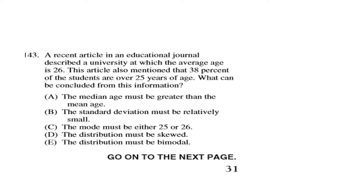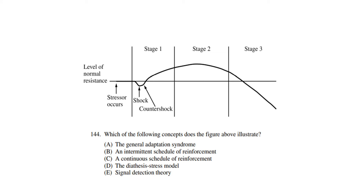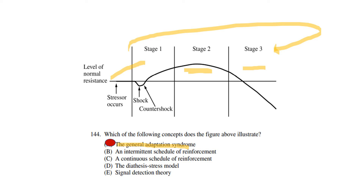Question 143: A recent article described a university at which the average age is 26, and also mentioned that 38 percent of students are over 25 years of age. What can be concluded from this information? The distribution must be skewed. Question 144: A figure illustrates the General Adaptation Syndrome (GAS), developed by Hans Selye. The three stages represent a person's stress response: the alarm stage, the adaptation (resistance) stage, and the exhaustion stage. The exhaustion stage is critical — when stress becomes chronic, it can lead to chronic disease or even death.